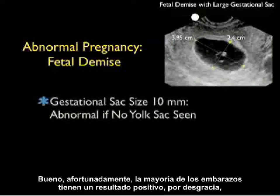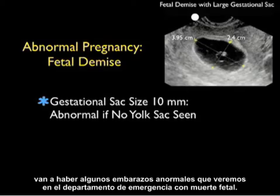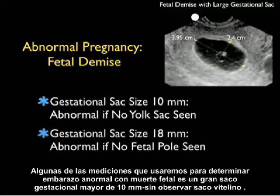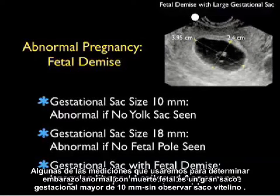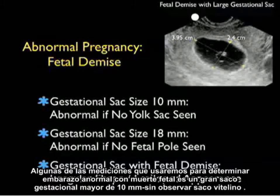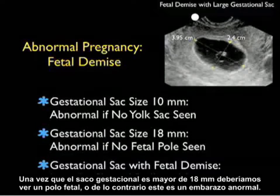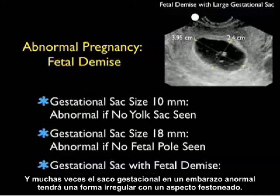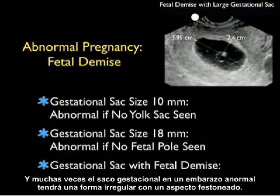While fortunately most pregnancies have a successful outcome, unfortunately there are going to be some abnormal pregnancies consistent with fetal demise. Measurements used to determine abnormal pregnancy include a very large gestational sac greater than 10 millimeters if no yolk sac is seen. Once the gestational sac is greater than 18 millimeters, we should see a fetal pole, or else this is an abnormal pregnancy. Many times the gestational sac in an abnormal pregnancy will have an irregular shape with a scalloped appearance.